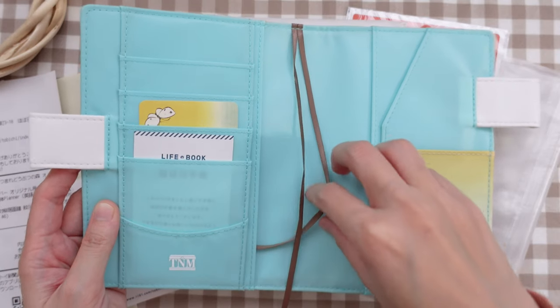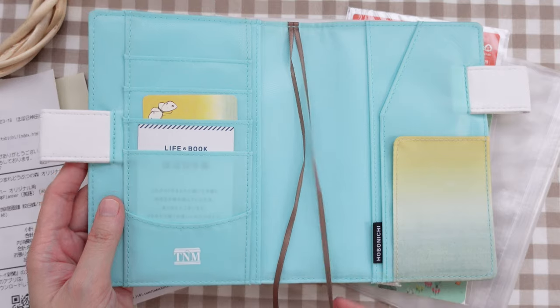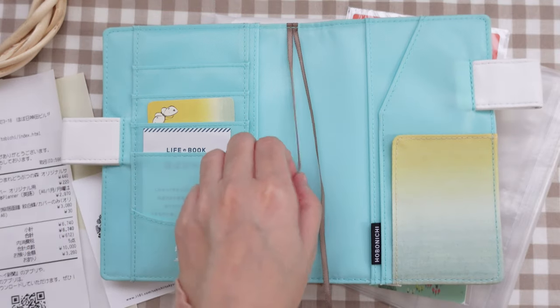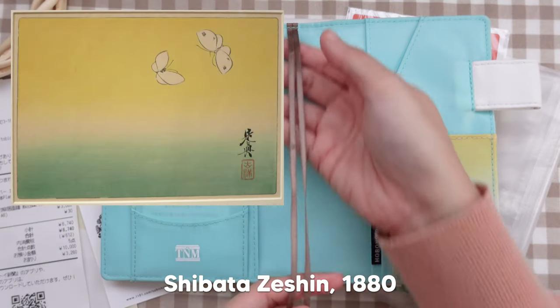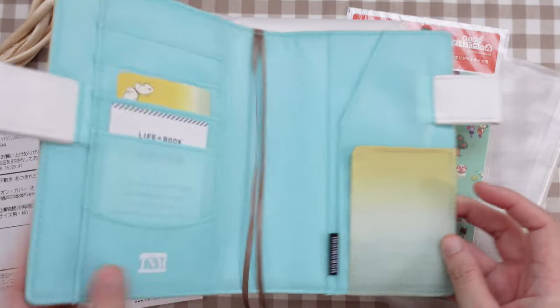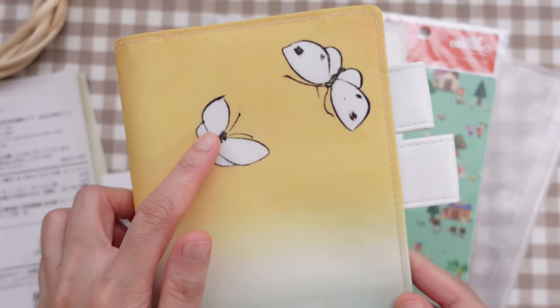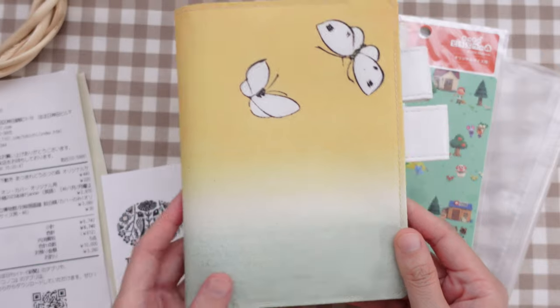I'm really lucky and I want to show you what is inside. So this particular cover is a collaboration with Tokyo National Museum for their 150th anniversary. It's based on an actual painting. I decided on this cover because yellow is my favorite color and I love the illustration of the butterfly on the cover as well as the gradient color.